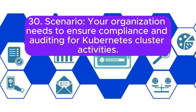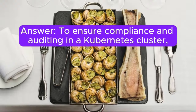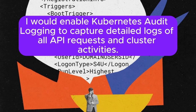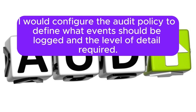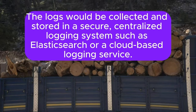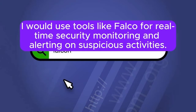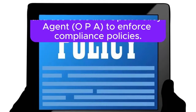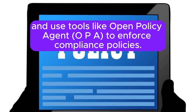Scenario 30: Your organization needs to ensure compliance and auditing for Kubernetes cluster activities. How would you implement this? Answer: To ensure compliance and auditing in a Kubernetes cluster, I would enable Kubernetes audit logging to capture detailed logs of all API requests and cluster activities. I would configure the audit policy to define what events should be logged and the level of detail required. The logs would be collected and stored in a secure, centralized logging system such as Elasticsearch or a cloud-based logging service. I would use tools like Falco for real-time security monitoring and alerting on suspicious activities. Additionally, I would implement RBAC policies and use Open Policy Agent (OPA) to enforce compliance policies.